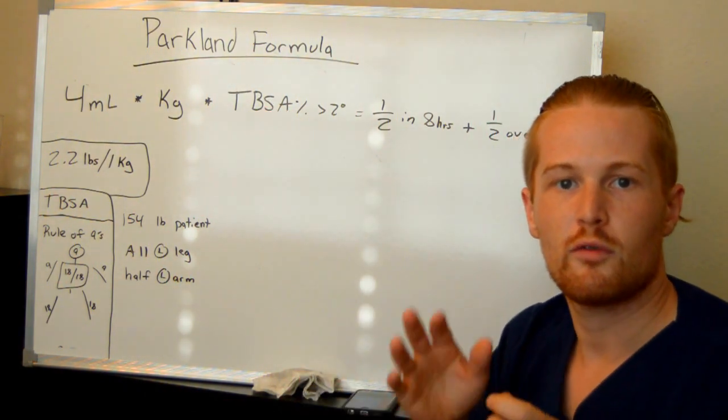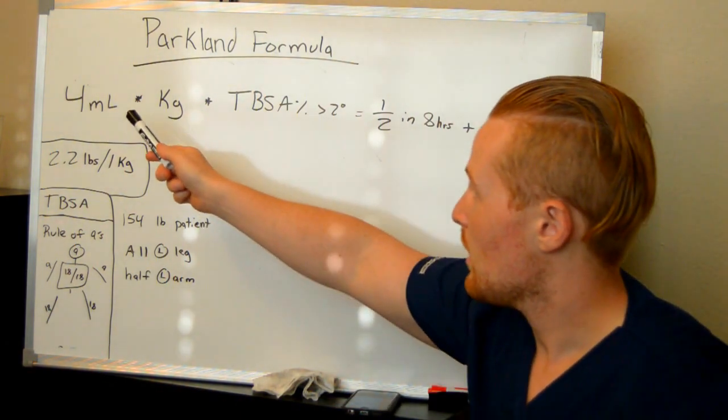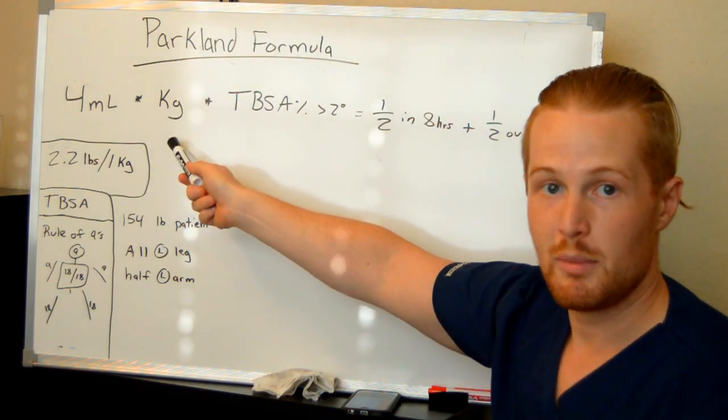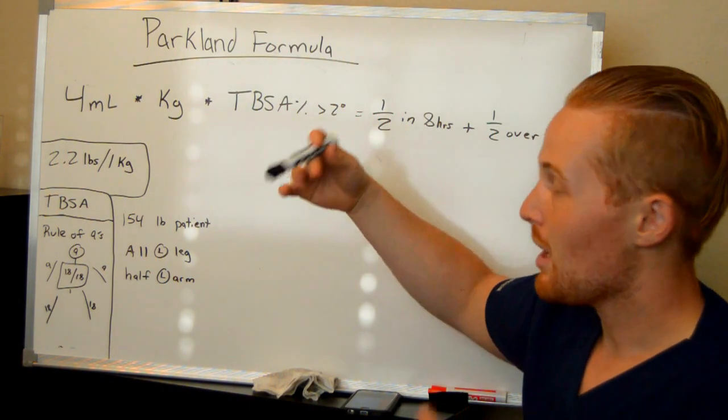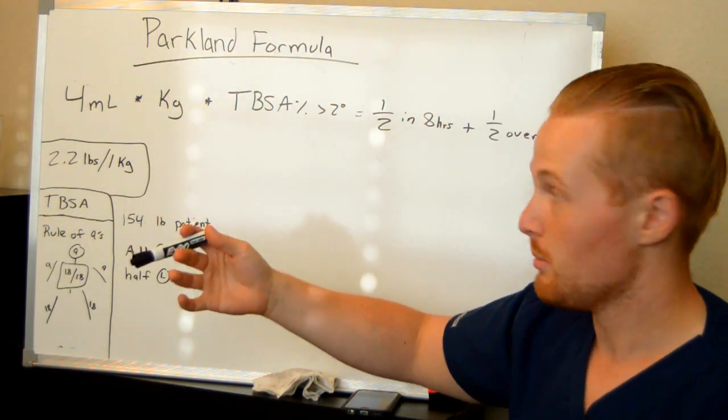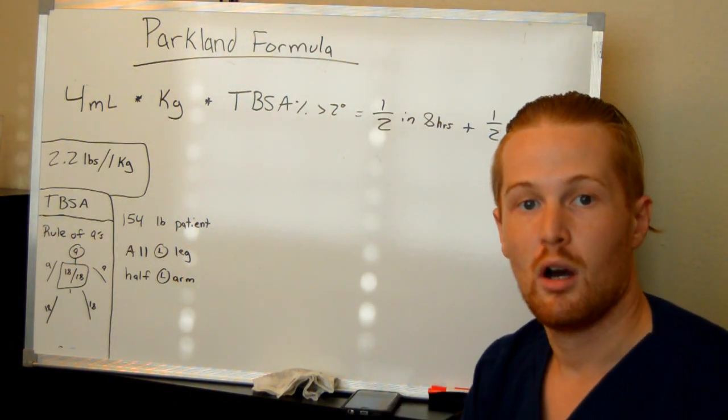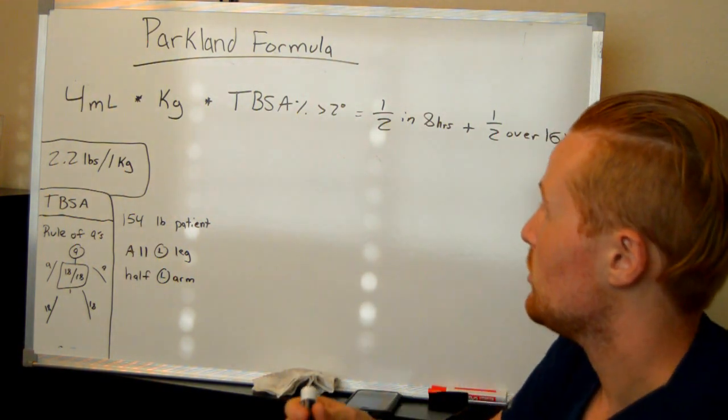How do we know how much to give? Parkland, which is a big hospital that's known very well for treating burns, has done a lot of studies and they found that if you take four milliliters for every kilogram of weight the patient times the amount of the body that is burned with second degree burns, the percentage, then you can get that 24 hour period of fluids. So the best way to explain this is let's just do an example together.